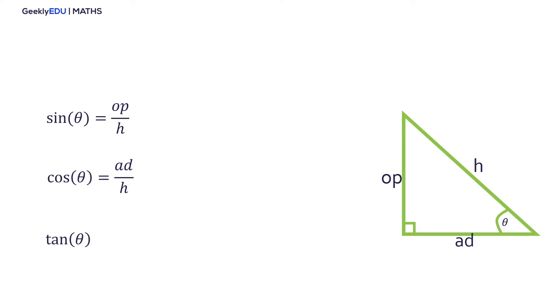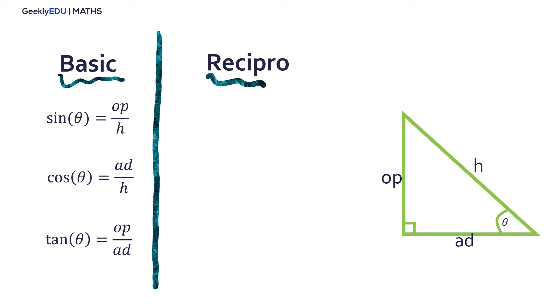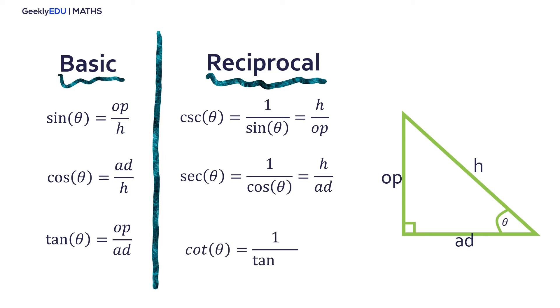and tangent of theta is the ratio between opposite side and the adjacent side. These three functions are the basic functions, and there are also the reciprocal functions. This is 1 divided by the basic functions. Therefore, cosecant is hypotenuse divided by the opposite side. Secant is the hypotenuse divided by the adjacent side, and cotangent is the reciprocal of tangent, equal to the ratio of the adjacent side and opposite side.